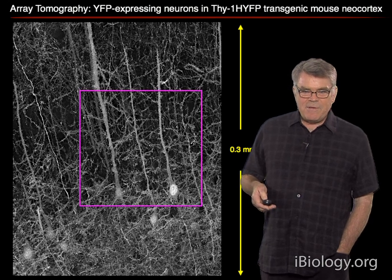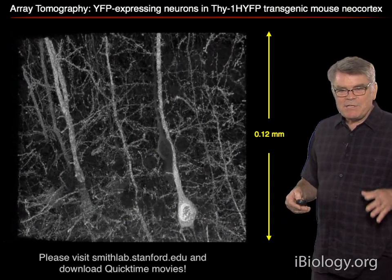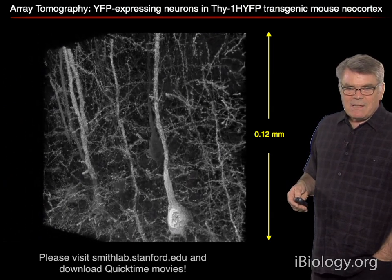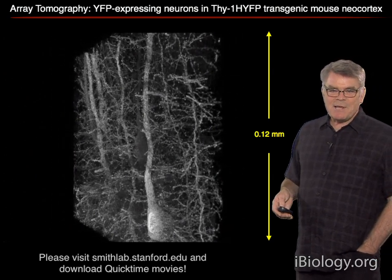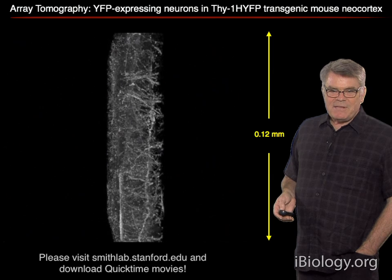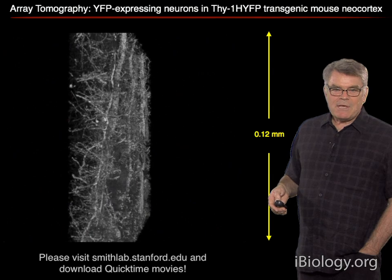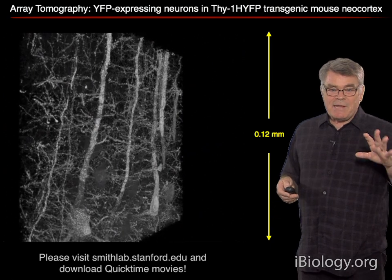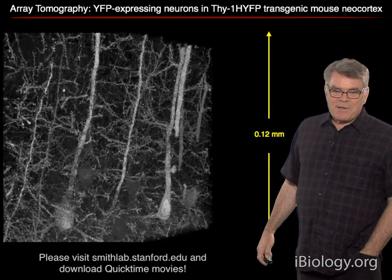Now we're going to zoom in even further, and I've prepared a little animation so you can better appreciate the three-dimensional nature of the image we are rendering. We're going to revolve it through 360 degrees. I hope you can see very clearly that this is a very detailed three-dimensional rendering. Perhaps you're already beginning to appreciate the really superlative resolution and detail that array tomography is capable of delivering. Keep in mind that this level of detail is present in that entire slab representing the entirety of the cortical layer structure.